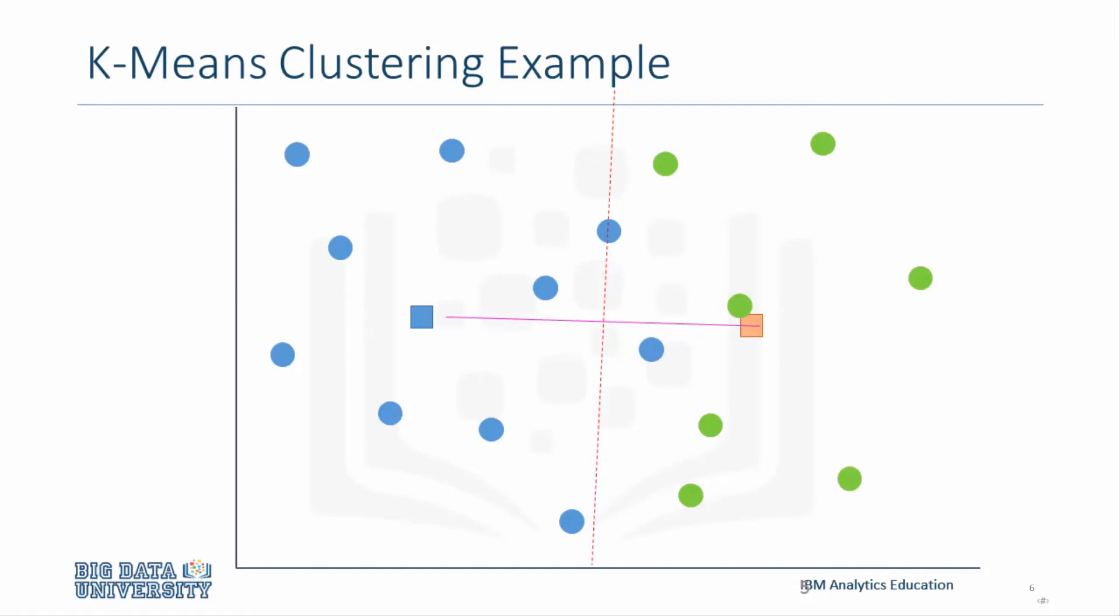Next, we need to recalculate the position of the centroids, which result in the centroids moving to these locations. Once again, let's get the line that separates the two centroids and see the perpendicular line that separates them. At this point, we only see two points that need to change from blue to green.